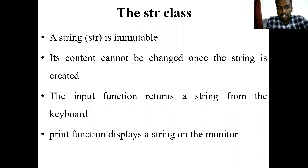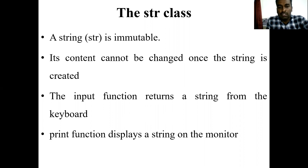So how to access a string in Python. If we want to give the string as an input, we use the input function — we already saw what the input function is used for. You just get the input from the keyboard with the help of the input function. Likewise, we use the same input function to return the string from the keyboard, meaning we get the string input from the user. The print function displays a string on the monitor, so once you get the string, you print it to the monitor using the print function.